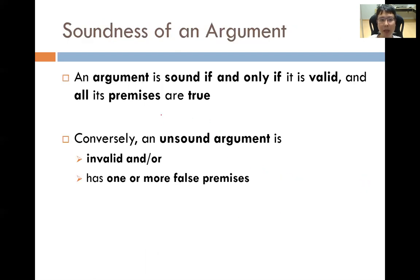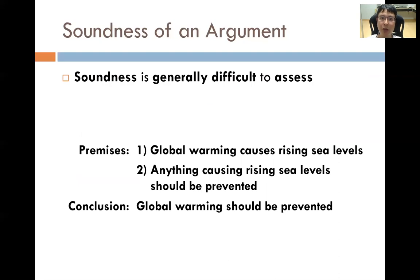The soundness of an argument: an argument is sound if and only if it is valid and also all its premises are true. This is a stricter condition than validity, because for validity we just have to make sure that as long as the premises are true the conclusion follows. For soundness, we must also make sure that all the premises are actually true. Soundness is generally difficult to assess because we are trying to decide whether the premises are true or not.